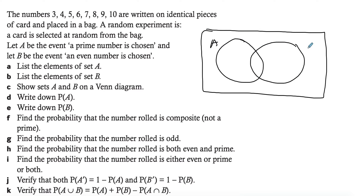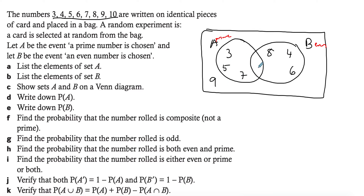So let this be A and B, where A is prime and B is even. Three is prime, four is even, five is prime, six is even, seven is prime, eight is even, nine is not prime and not even so it goes outside, and ten is even. Notice there's nothing in the intersection, meaning there's no number here that is both prime and even, so we don't have combined events in this example.